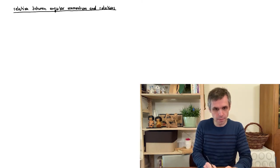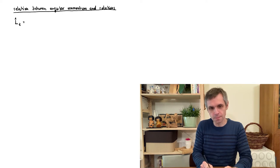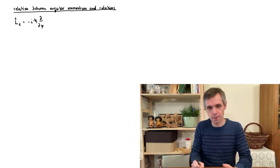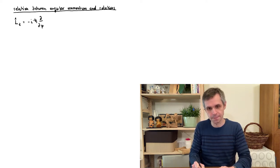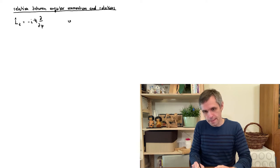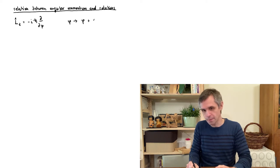What we mean by analytical properties becomes clear when we write down the angular momentum component Lz in the form encountered in spherical polar coordinates. This form looks very much like an ordinary momentum operator but with position replaced by the angle φ. A rotation about the Z axis would then ask us to increment φ by some amount α.